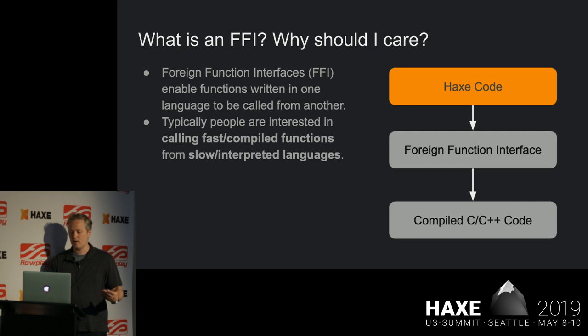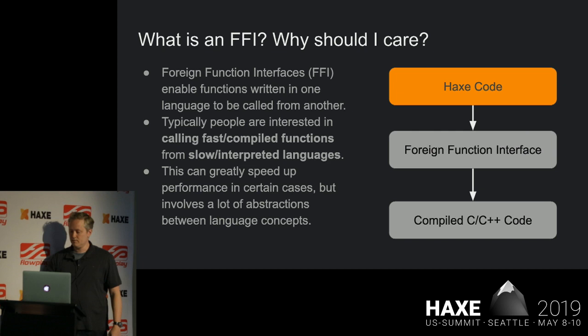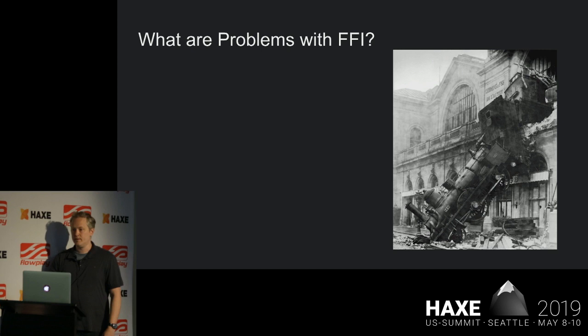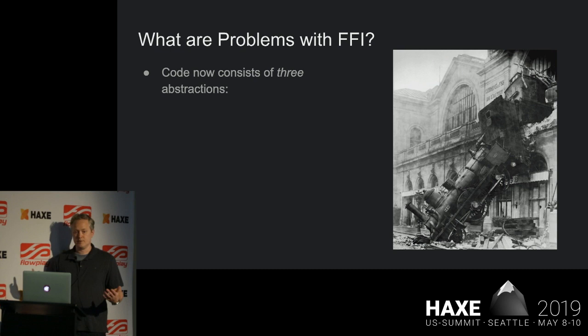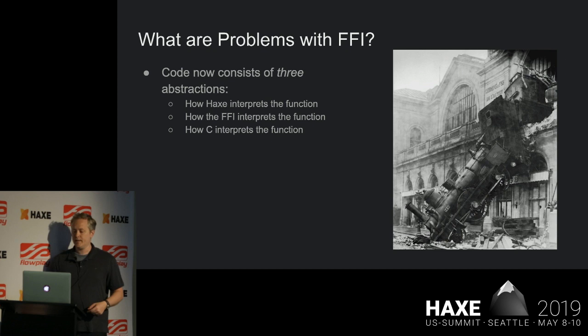Once you've done all the checks and compiled it, you can call into it directly and take advantage of the speed and the flexibility of the interpreted language. This greatly speeds up performance in certain cases, but it involves a lot of abstractions between language concepts because there's an impedance mismatch between how you write those two languages. If you're writing with a HAXE FFI, you've got to understand how HAXE is interpreting the function, how the FFI is interpreting the function, and how C is interpreting the function. All these things chain together, and when things break you've got to know where it's breaking and what's the lowest cost abstraction you can put on it.